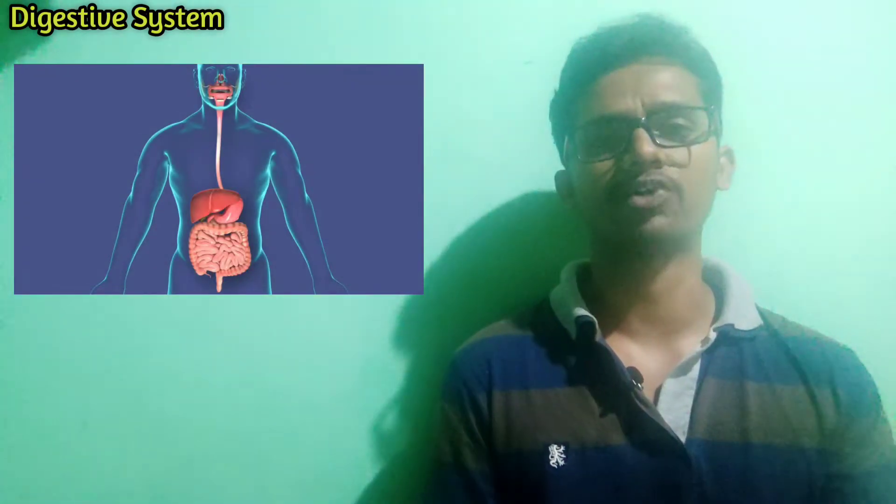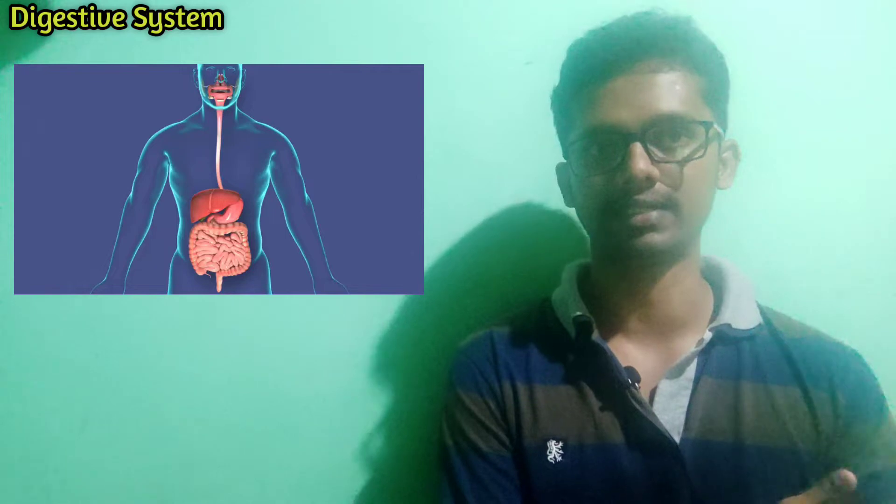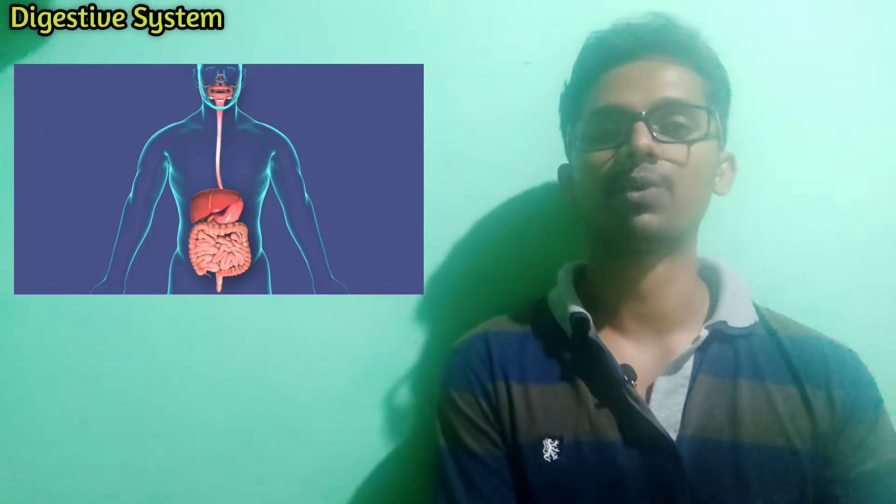Hello everyone, we are going to talk about Anatomy and Physiology of Digestive System Part 2. This is the continuation from Part 1, which covered mouth to stomach. In Part 2, we will start from the small intestine, then large intestine, covering the physiology of the digestive system, and finally its functions. So let's begin.